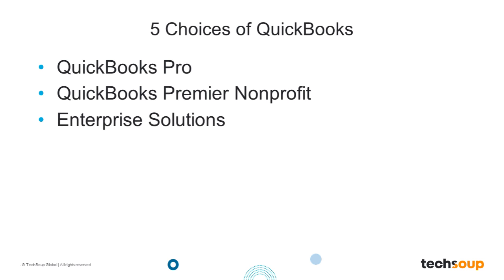The third option is Enterprise Solutions, which is fairly expensive at around $1,500 or more. It's exactly like Premier Nonprofit and Pro — the screens look the same, it works the same — but it's more powerful and robust. For example, with QuickBooks Premier or Pro, the maximum number of donors you can put in the customer list is 14,500, whereas with Enterprise Solutions you can have over 100,000 donors. It's really meant for larger nonprofits.